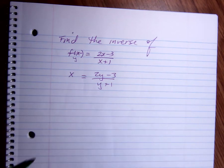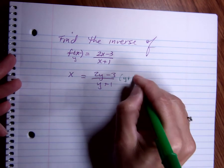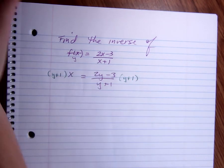The first thing I need to do is get rid of the variables in the bottom. So I'm going to multiply both sides by y+1.